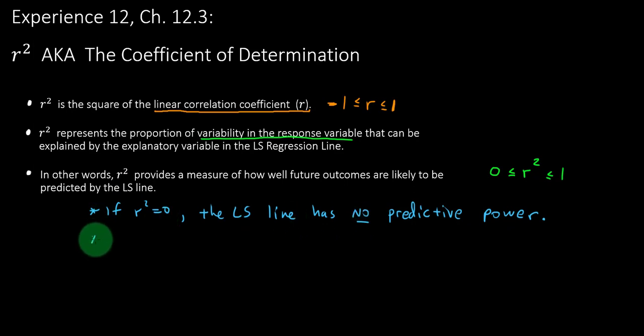On the flip side, as good as it gets, if r squared equal one, then the least squares line explains all of the variability that was observed in your response variable.